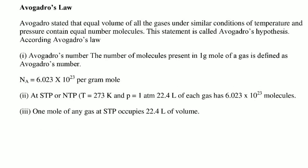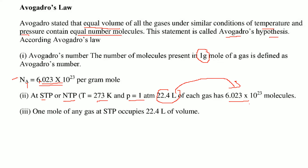Avogadro's law states that equal volumes of all gases under similar conditions of temperature and pressure contain equal numbers of molecules. This is known as Avogadro's hypothesis. The Avogadro number NA is the number of molecules present in 1 gram mole of a gas, equal to 6.023 × 10²³ per gram mole. At standard temperature and pressure (T = 273 K, P = 1 atm), 22.4 liters of any gas contains 6.023 × 10²³ molecules — that is, 1 mole of any gas at STP occupies 22.4 liters.